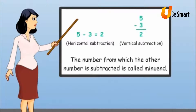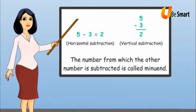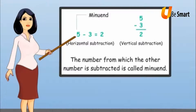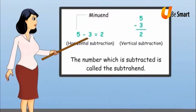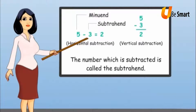The number from which the other number is subtracted is called the Minuend. The number which is subtracted is called the Subtrahend.